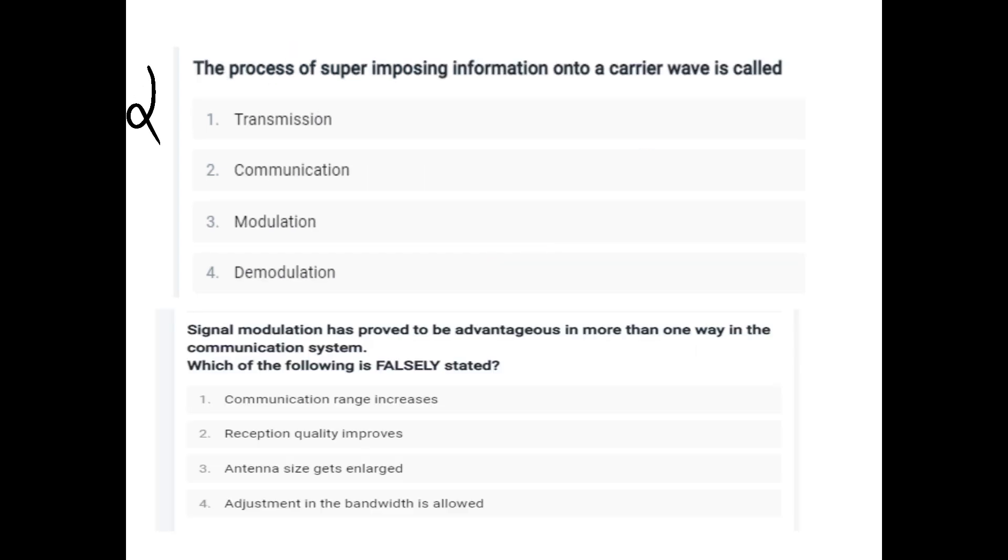Question two: The process of super-imposing information onto a carrier wave is called modulation.